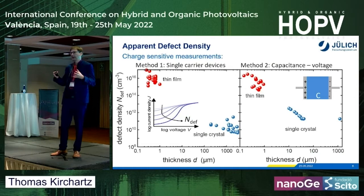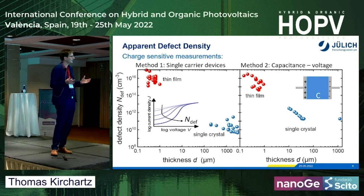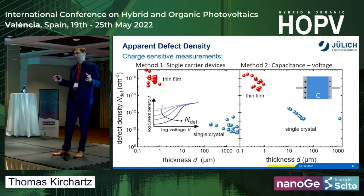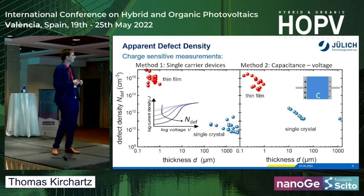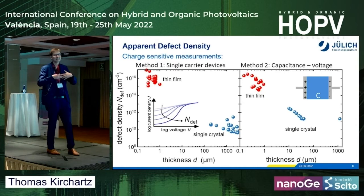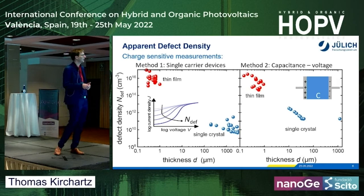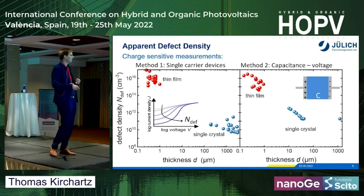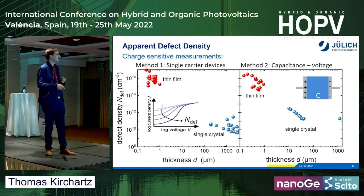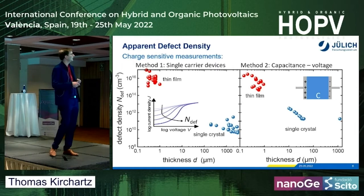Are defect densities also different between thin films and single crystals? Many people measure defect densities and there are tons of techniques. But looking at the literature, two techniques stand out because they are very frequently used. The first is the single-carrier device technique, where you measure space-charge-limited current at forward bias and identify a peculiar trend in log(J) vs. log(V) that allows you to determine defect densities. The second is capacitance versus voltage, where you measure capacitance and derive defect density from its magnitude and voltage dependence.